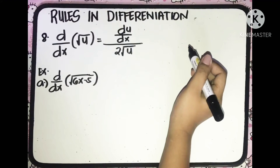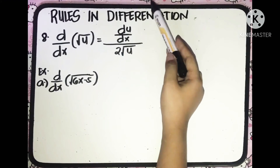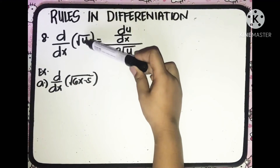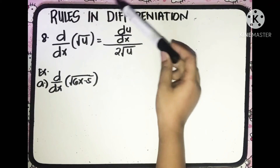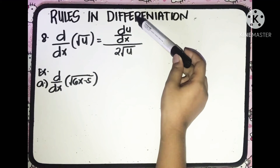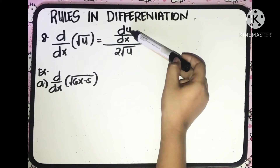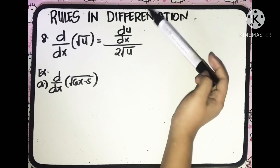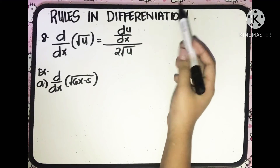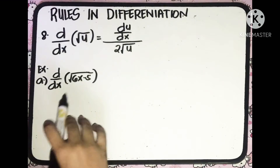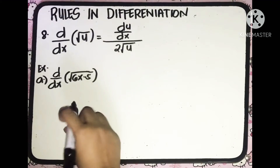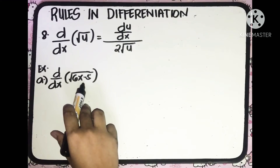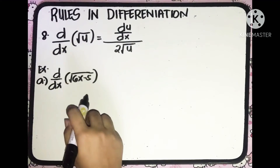The 8th rule is the derivative of the square root of u with respect to x. It is equal to the derivative of u with respect to x, all over 2 square root of u. Let's have this example: the derivative of square root of (6x minus 5) with respect to x.